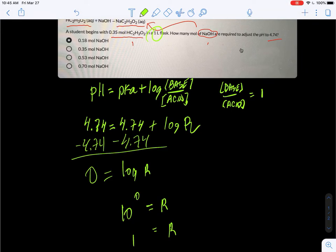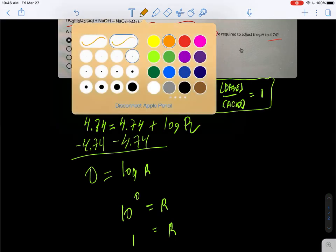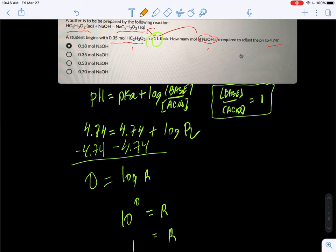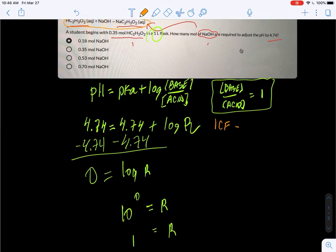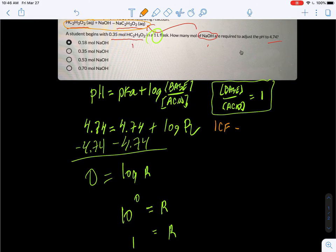What that means is that the base to acid ratio is going to be equal to one. We're going to use this information in just a little bit. Now we want to look at this chemical reaction and set this up in an ICF table. An ICF table is just like an ICE table but there's no equilibrium—it's initial, change, and final.